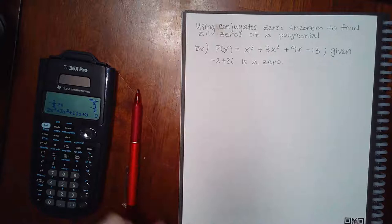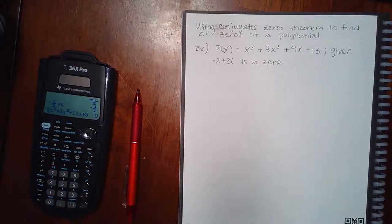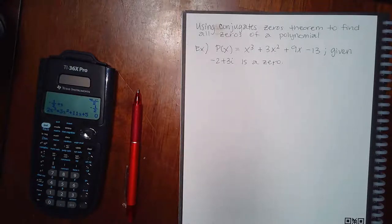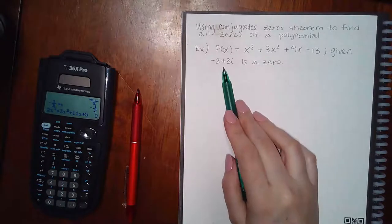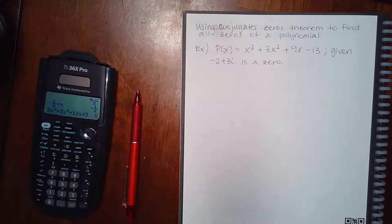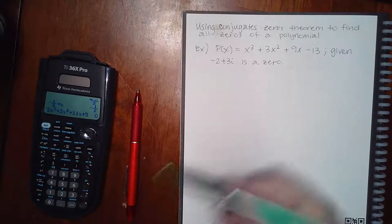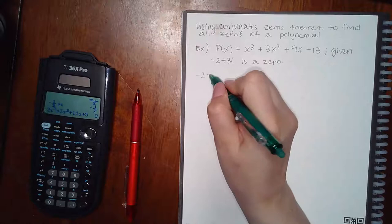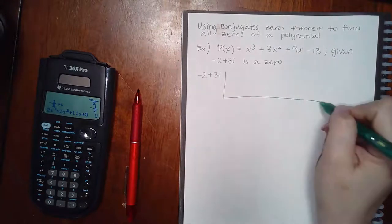Here we're using our conjugate theorem to find all zeros. This is like the problems from module 30 — they give us a zero, but it's an imaginary zero. We don't have to do the possible rational zeros theorem because we already know one of them. We just put that number on the outside and do the synthetic division.